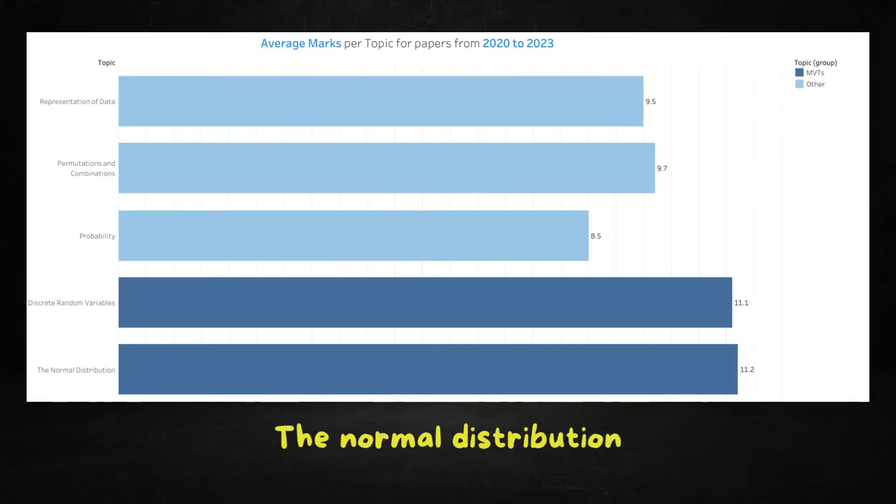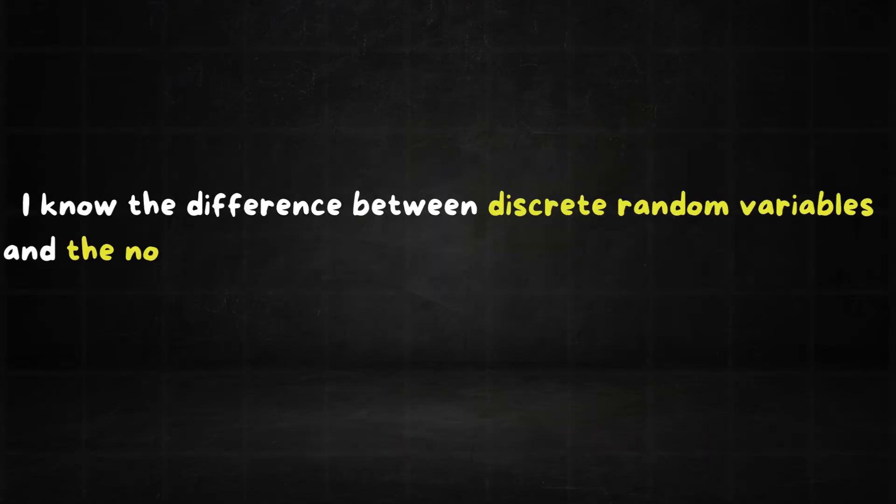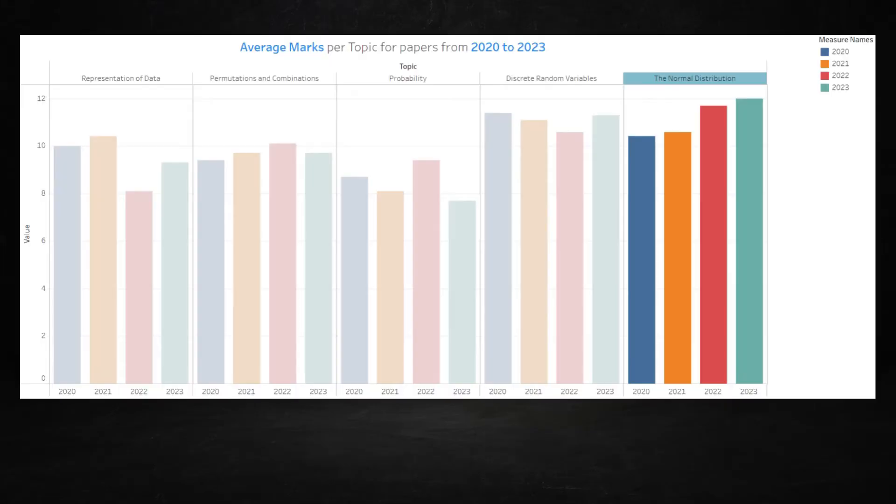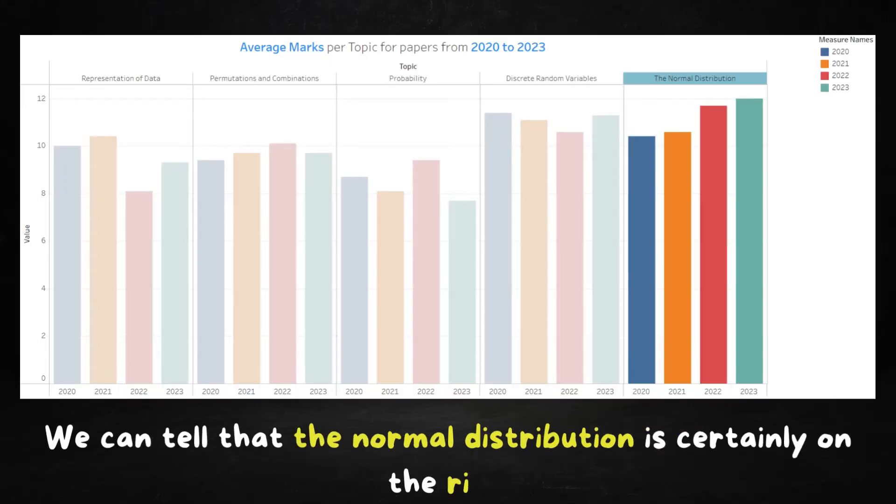With 11.2 marks per paper closely followed by discrete random variables. I know the difference between discrete and normal distribution is minuscule. But if we look at the trends over the years, we can tell that the normal distribution is certainly on the rise. And I suspect that by the end of this year, it won't even be close. But what makes these two topics valuable?